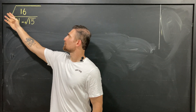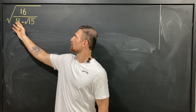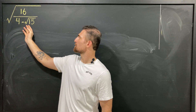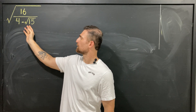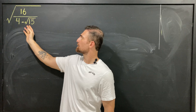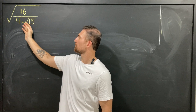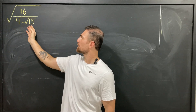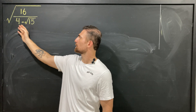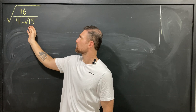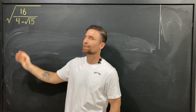Find the value of the square root of 16 over (4 minus square root of 15). To solve this, I'm going to multiply both top and bottom by the conjugate of the denominator. But what is the conjugate of 4 minus square root of 15?